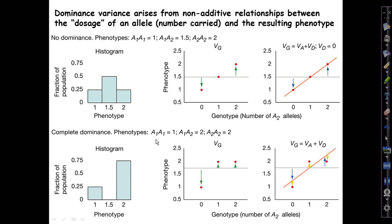Here's a case of complete dominance, the usual kind we think about, where A1-A1 individuals have phenotype of 1, but both the heterozygotes and the A2 homozygotes have a phenotype of 2. There is a reasonably strong regression slope between the dosage of the A2 allele and the phenotype, but the actual phenotypes don't lie on the line because it's not a linear additive relationship. In this case there is both some additive variance—the part captured by the slope of the line—and also the dominance variance, represented by these yellow arrowheads showing how the actual phenotypes depart from the regression line.